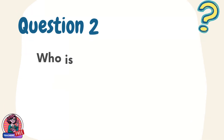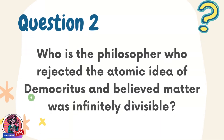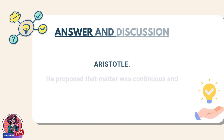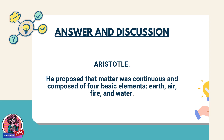Question 2. Who is the philosopher who rejected the atomic idea of Democritus and believed matter was infinitely divisible? Answer: Aristotle. He proposed that matter was continuous and composed of four basic elements: earth, air, fire, and water.